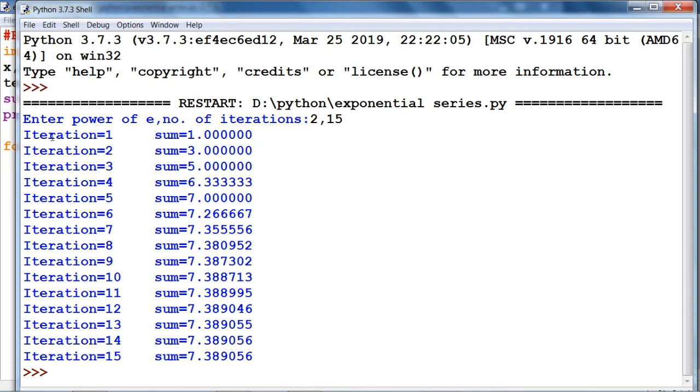Here you can see our first iteration, the sum is 1. For second it is 3, that means 1 plus x plus x squared by 2 factorial. It will generate in that way. Iteration 3 will give 5, then 6, and so on. Up to 15 iterations it will give the sum around 7.389056.